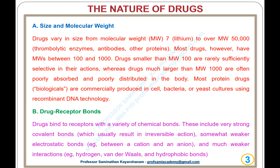Drugs smaller than molecular weight 100 are rarely sufficiently selective in their actions, whereas drugs much larger than molecular weight 1,000 are often poorly absorbed and poorly distributed in the body. Most protein drugs — biologicals — are commercially produced in cell, bacteria, or yeast cultures using recombinant DNA technology.